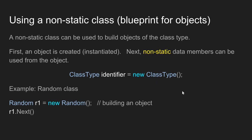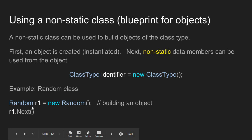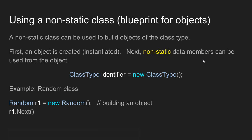This may be a little shaky now, but we'll make it more solid as the videos go on. As an example of building an object from a non-static class, let's look at the Random class. To use the Random class, first I have to build an object of type Random. The syntax would be: Random is the class name, r1 is the name of my object, and I'm going to build a new object using the default constructor. Once I build this object r1, I can call non-static methods from it. You have to first build an object, then call the data member from the object.